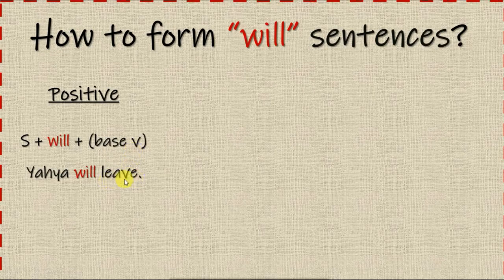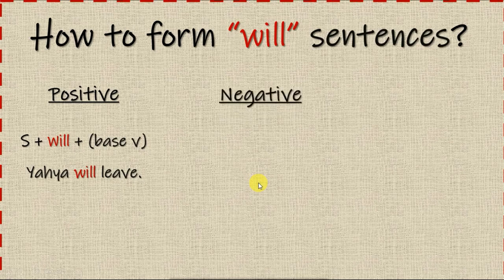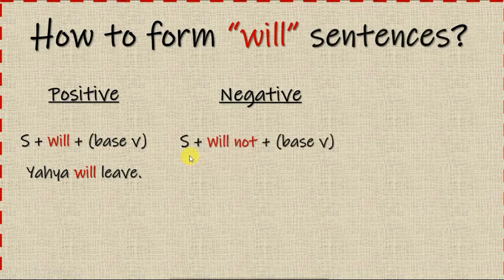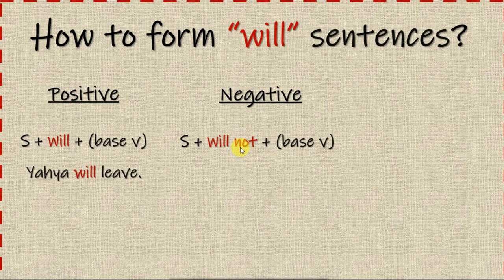The second form is the negative sentence. To make a negative sentence, you simply add 'not' after 'will.' The structure is: subject + will not + base verb. This is the only change — you just add 'not' to the verb 'will.'